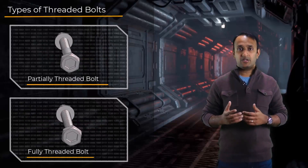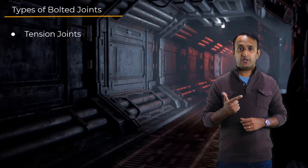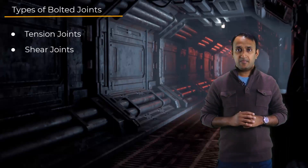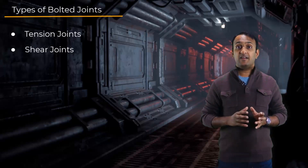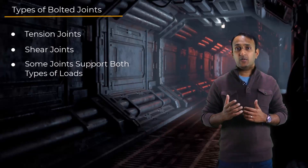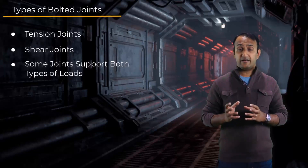Depending on the types of load supported, the bolted joints can be classified into two types: the tension joints and the shear joints. Each type has a different mechanism and therefore has different design requirements. Some bolted joints may need to support both types of loads, in which case the joint shares both design requirements.